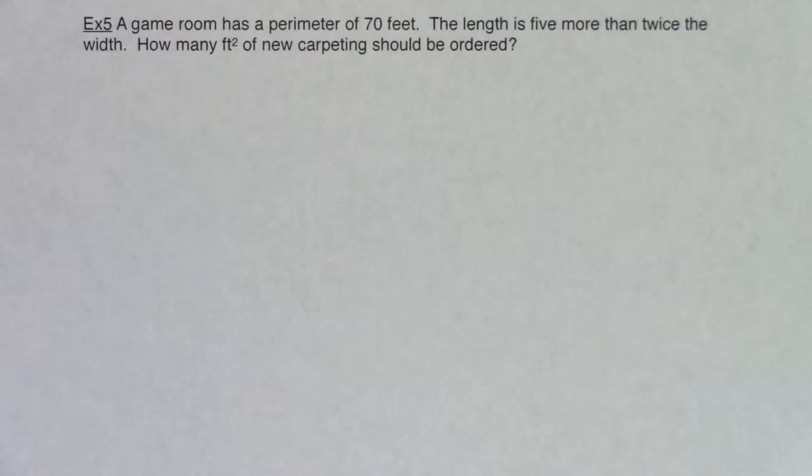All right Math 31, last example in section 2.3. We have a game room with a perimeter of 70 feet. The length is five more than twice the width. How many square feet of new carpeting should be ordered?